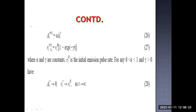As T tends to infinity, A_i(t) tends to 0 and R_i(t) tends to R_i0. When T tends to infinity, the exponential term becomes 0, so R_i(t+1) equals R_i0 — the pulse emission rate returns to its initial value. And A_i equals 0 at T equal to infinity, meaning the bat has actually detected the prey.